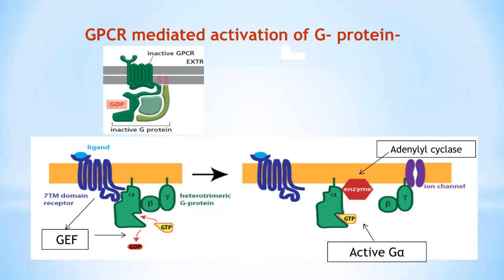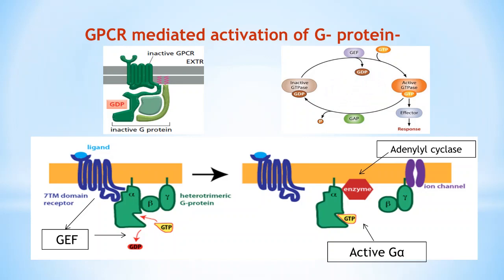Activated G proteins target either enzymes or ion channels embedded in the plasma membrane and relay the signal forward. The G alpha subunit is a GTPase — an enzyme that hydrolyzes GTP to GDP — thus inactivating the target protein. The time for which the G protein remains active depends on how fast this GTPase activity takes place. This activity is greatly enhanced by binding of the alpha subunit to a protein called RGS (Regulator of G protein Signaling). RGS acts as an alpha subunit-specific GTPase-activating protein (GAP), helping shut off G protein-mediated responses in all eukaryotes.